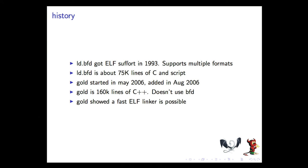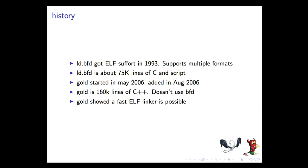A little bit of history. Historically, the linker shipped from the 90s — or even before — in Unix systems is ld.bfd, called this because it uses libbfd. It had ELF support in 1993. It supports multiple formats, including a.out. It's a very old codebase, about 75,000 lines of C and shell script. It seems weird because linkers are just a glorified version of cat — but the devil is in the details, apparently.